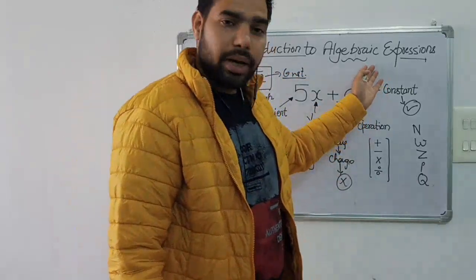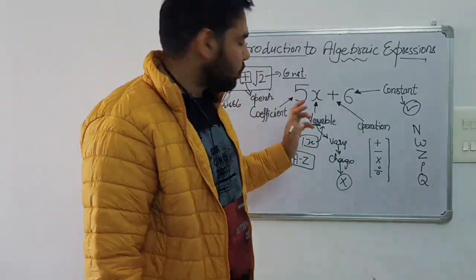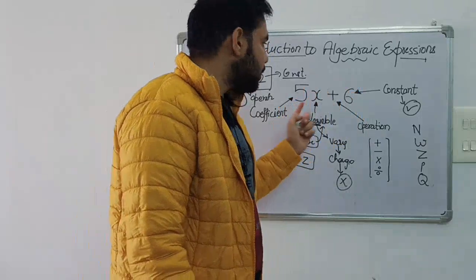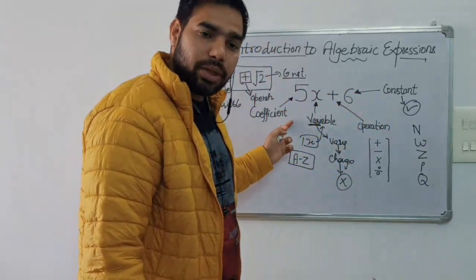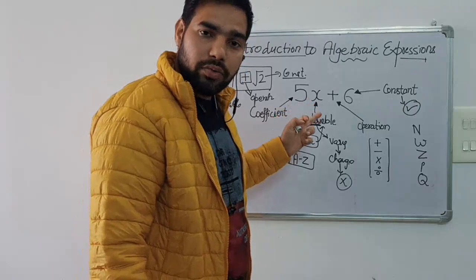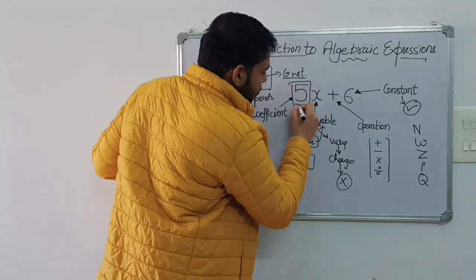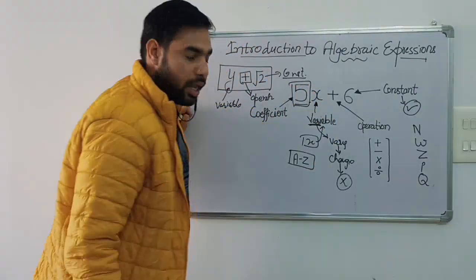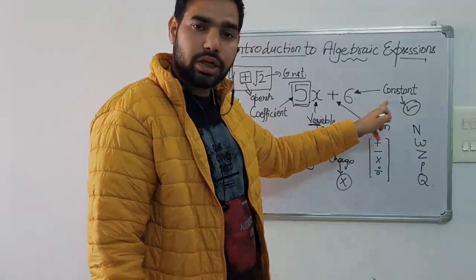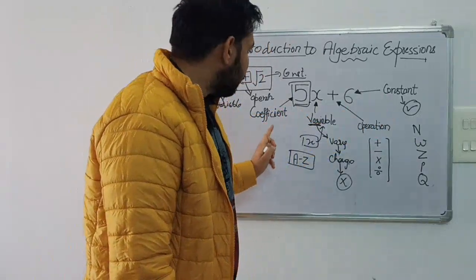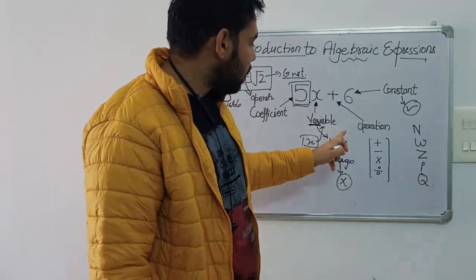Now, what is a coefficient? The basic difference between a coefficient and a constant is that a coefficient is something that is multiplied or divided by a variable. For example, the 5 in 5x — which is multiplied by the variable x — is known as a coefficient.